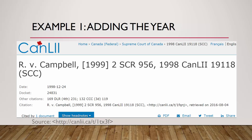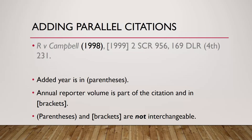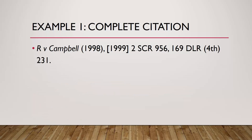In this example, the SCR published the decision in a 1999 volume, but the decision was issued in 1998. This means we need to add the year 1998 in round parentheses. Note that the 1999 is not something we added — it is part of the volume information for the SCR, which is why 1999 is within square brackets and placed after the comma. The square brackets should not be changed. Here is our complete citation with the year added in round parentheses before the comma.